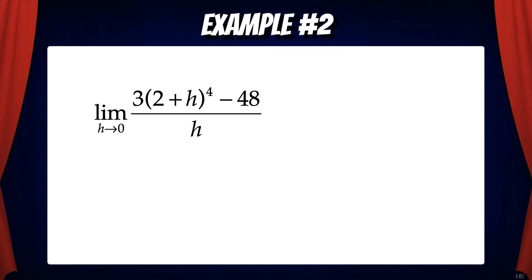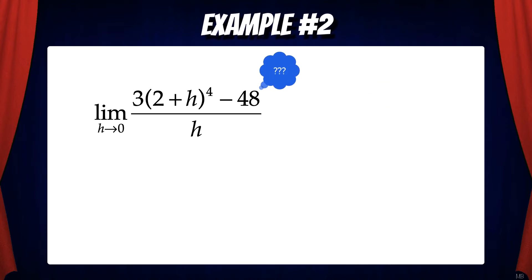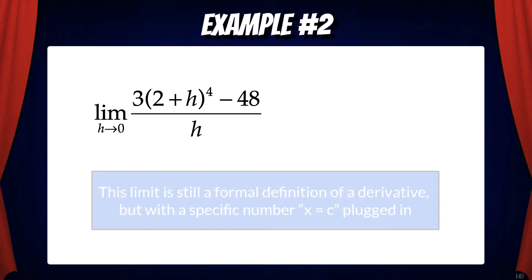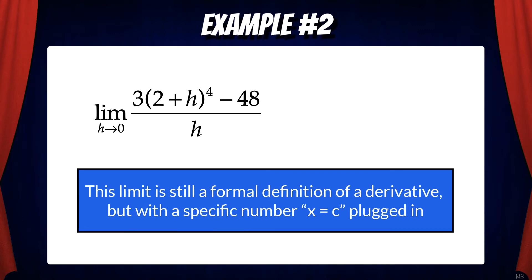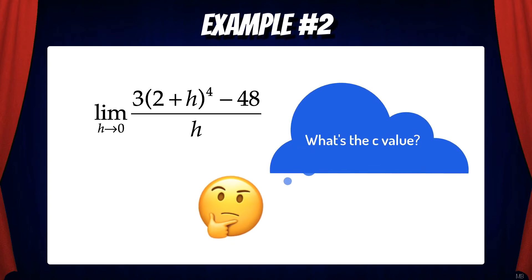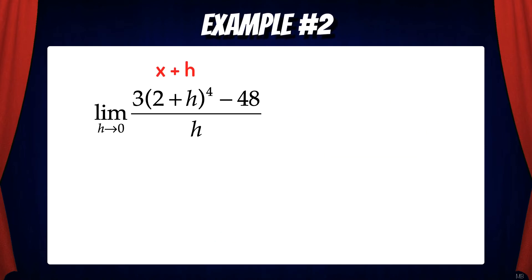We have the limit as h goes to zero of three times two plus h to the fourth power minus forty-eight over h. At first glance, this may look confusing. What's the forty-eight? What's the two? This limit is still a formal definition of a derivative, but with a specific number x equals c plugged in instead of just x. But what's the c value? Well, instead of x plus h, we have two plus h. That means c equals two.